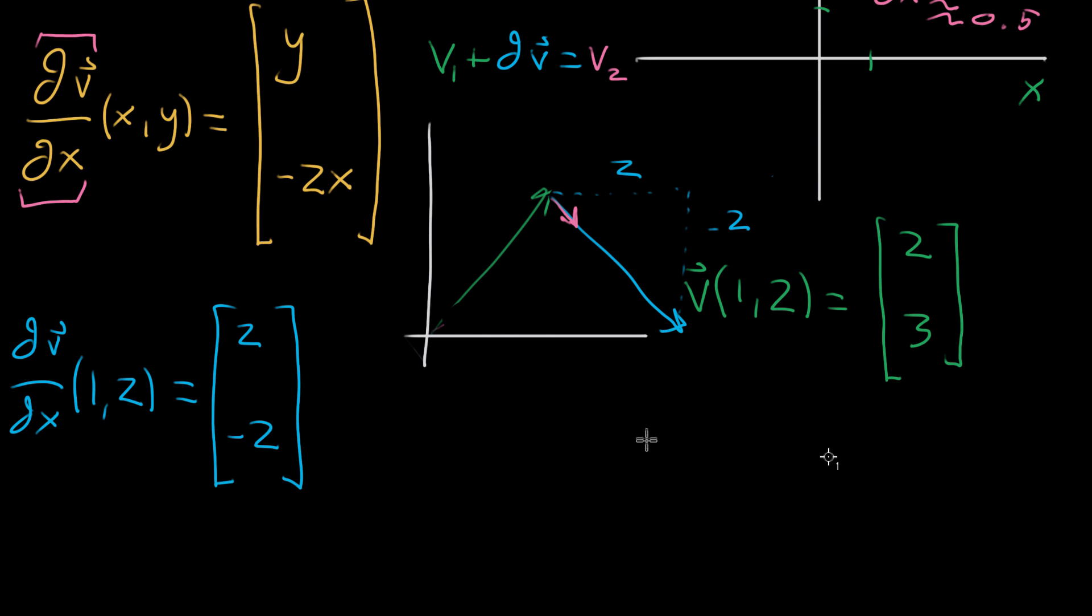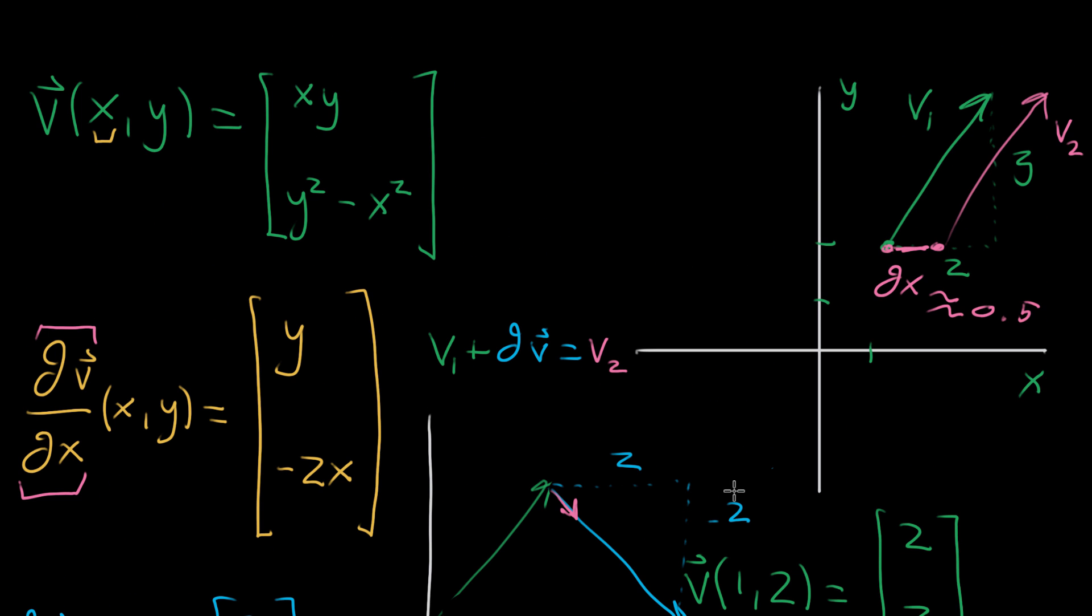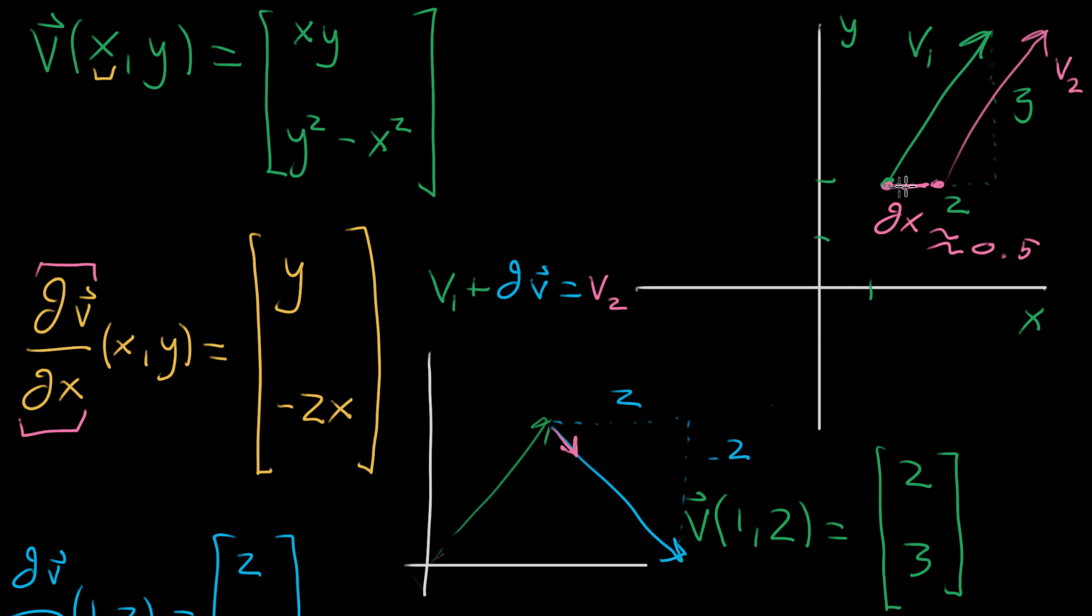So these will be your dv's, something in that direction. And what that means in our vector field then, as you move in the x direction and consider the various vectors attached to each point, as you're kind of passing through the point one, two, the way that the vectors are changing should be somehow down and to the right. The tip should move down and to the right.